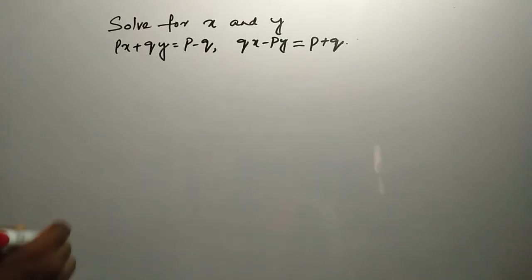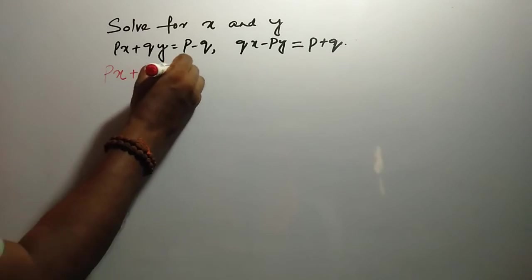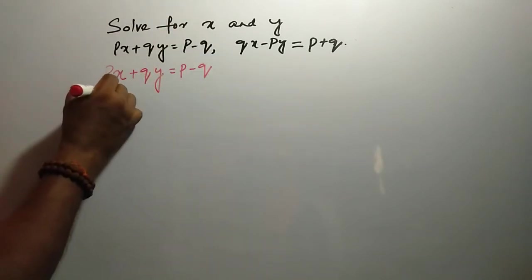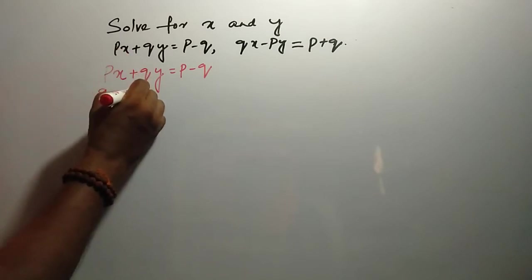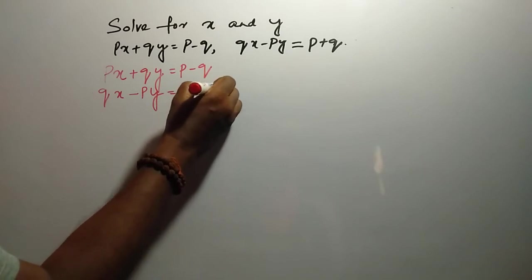Now, PX plus QY is equal to P minus Q and QX minus PY is equal to P plus Q.